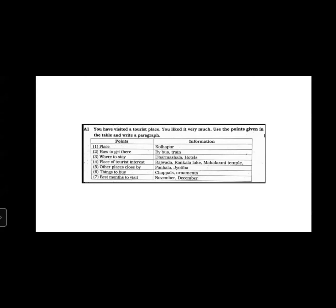The points given are: Place — Kolhapur; How to get there — by bus or train; Where to stay — dharamshala and hotels; Places of tourist interest — Rajwada, Rankaya Lake, Mahalakshmi Temple; Other places close by — Panhala, Jotiba; Things to buy — chappals and ornaments; Best months to visit — November and December. This is the table information you must write as a paragraph.